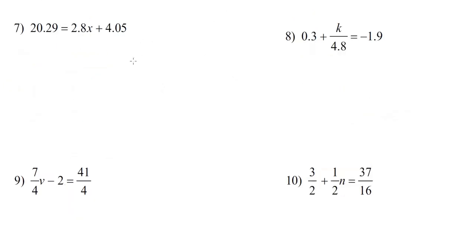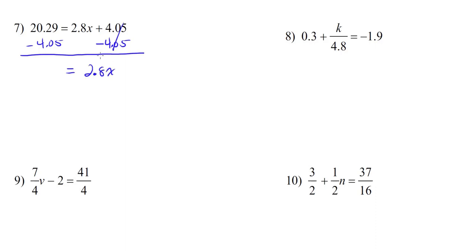Number 7. The only difference between number 7 and problems we've done so far is now we have decimal points. Step 1, undo addition and subtraction — so we're going to subtract 4.05 from both sides. On the right, they cancel out, leaving us with 2.8x. And on the left, 20.29 minus 4.05 is 16.24. Then we just have to divide both sides by 2.8. On the right, 2.8 cancels out, leaving us with x. And on the left, 16.24 divided by 2.8 is 5.8.